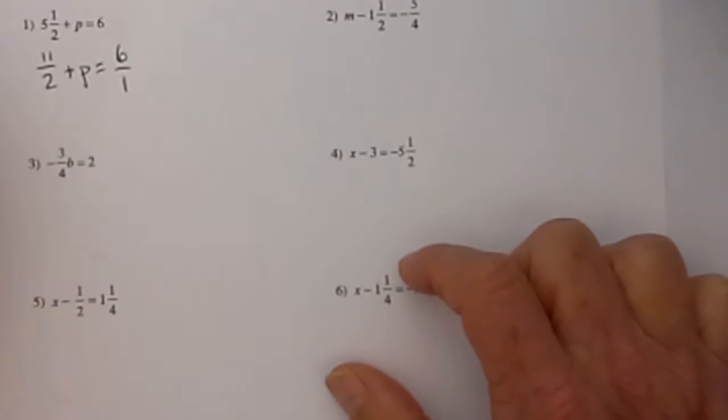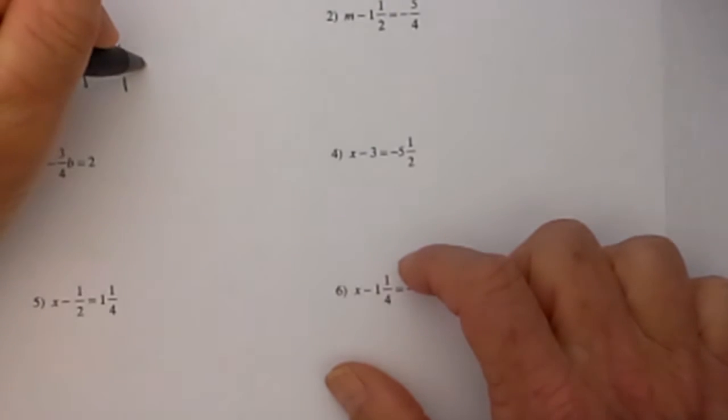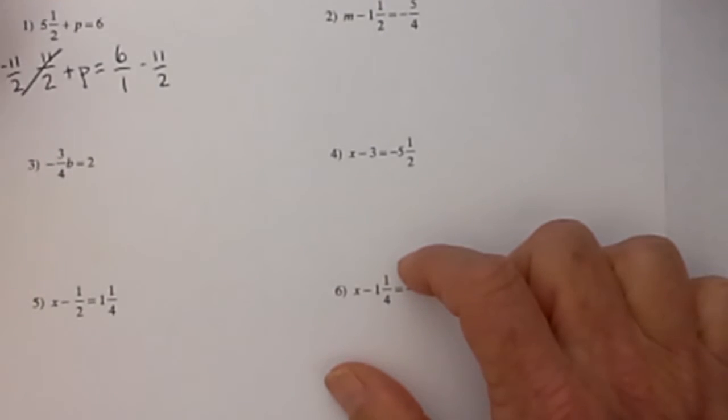Next to get rid of the 11 halves I will subtract 11 halves and what I do to one side I will need to do to both sides. So it is minus 11 halves so these cancel. So we are now left with p is equal to 6 over 1 minus 11 halves.